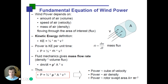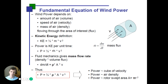If we substitute other variables for that mass flux or mass flow rate, dm/dt can be replaced by the Greek symbol representing air density times the area A times velocity. Substituting into our power equation, we get: P equals one-half times the density of the air times the area through which the air is moving times the velocity of the air cubed.